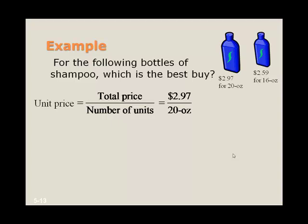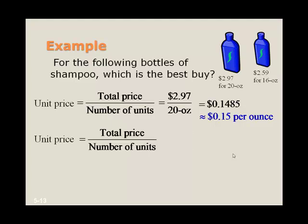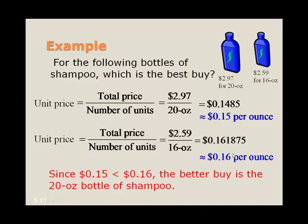So for the first one, we've got $2.97 for 20 ounces. We divide 20 into $2.97, and we get a unit price of 0.1485. So that's about 15 cents per ounce. So it looks like the 20-ounce is a better buy.